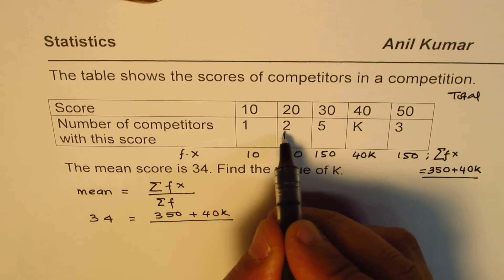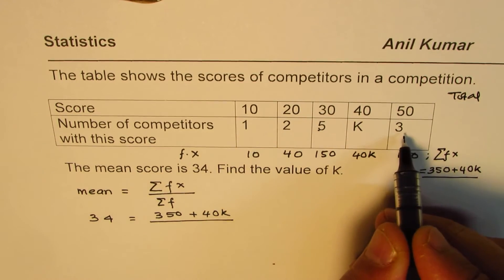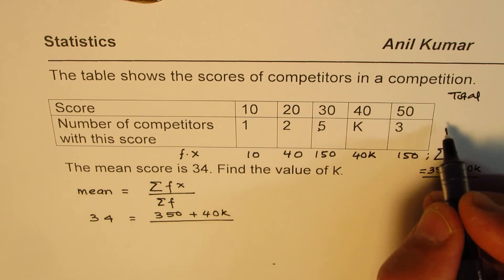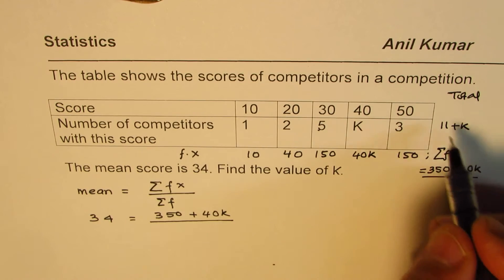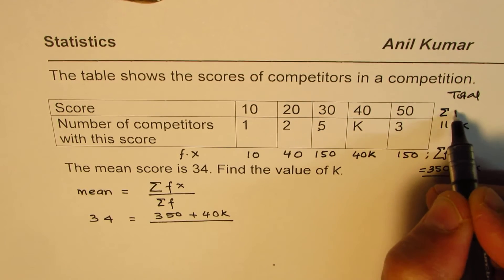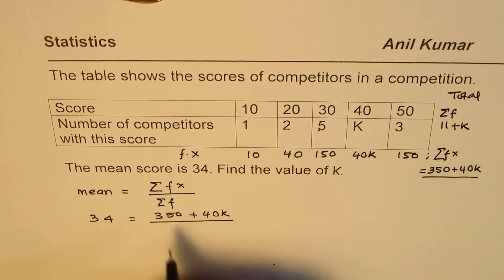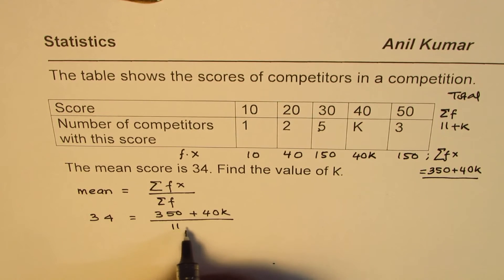Let's find the total here for frequency. So it is 1 plus 2 plus 5 plus 3 which is 11 plus K. So we know sigma of frequencies is 11 plus K. So we are dividing by 11 plus K.